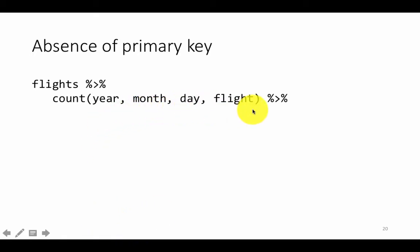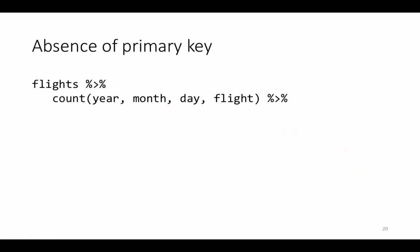Let's say we count by year, month, day, and flight. We would expect that this count would actually be just one for every single combination of year, month, day, and flight. In other words, if you have flight UA 1050, you may think that today's date plus UA 1050 should return only one flight. But if you run it, you find that is not the case.